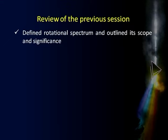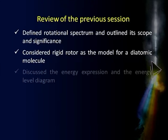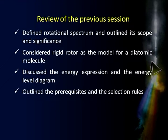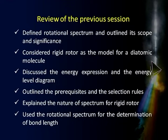Let us quickly recall what we did in the previous session. We started with defining rotational spectrum and outlined its scope and significance — what information can we get from it. We considered the rigid rotor as a model for a diatomic molecule, derived the energy expression and energy level diagram, discussed prerequisites for a molecule to show the spectrum, took up the selection rules, and explained the nature of the spectrum. Towards the end we determined the bond length of carbon monoxide from a sample spectrum.